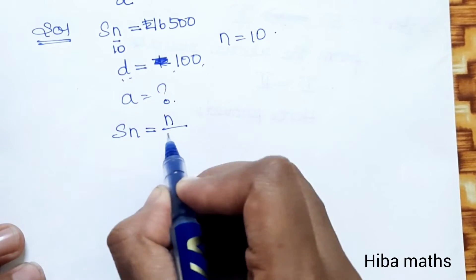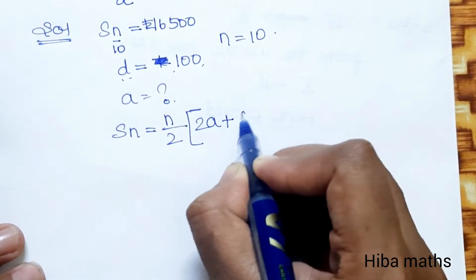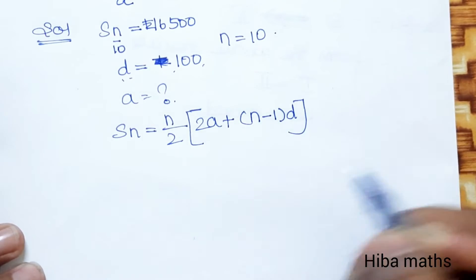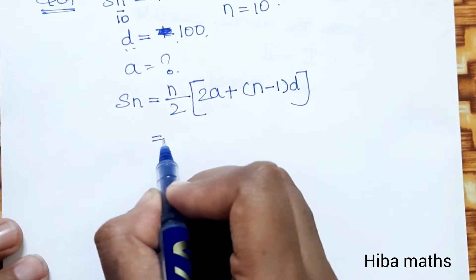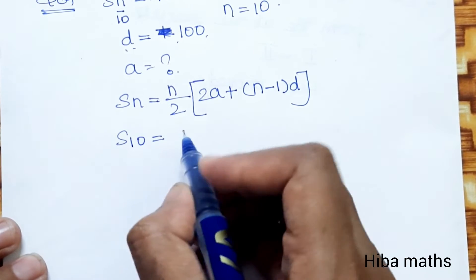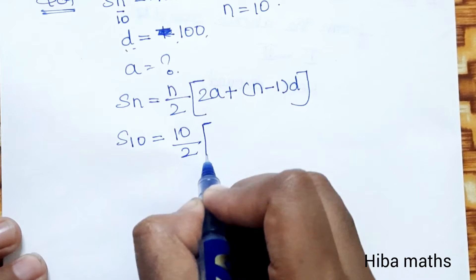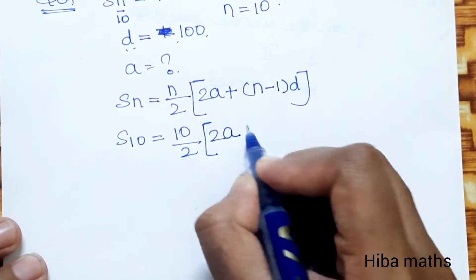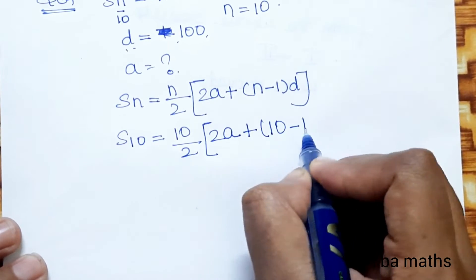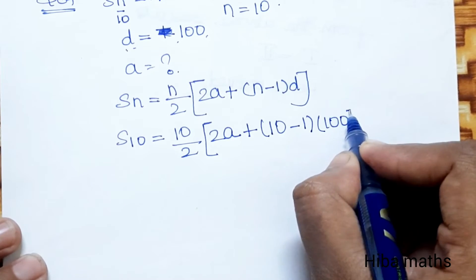Now the S of N formula for AP: S of N is equal to N by 2 into 2A plus N minus 1 into D. So S of 10 equals 10 divided by 2, into 2A plus 10 minus 1 into D, where D value is 100.